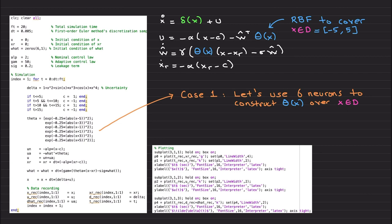Alright, so for case one, I am going to cover four cases. For case one, I am covering -5 to 5 using just six radial basis functions, six neurons. And this is how you choose theta to be used in your neuroadaptive control signal as well as in the parameter estimation law here and here.